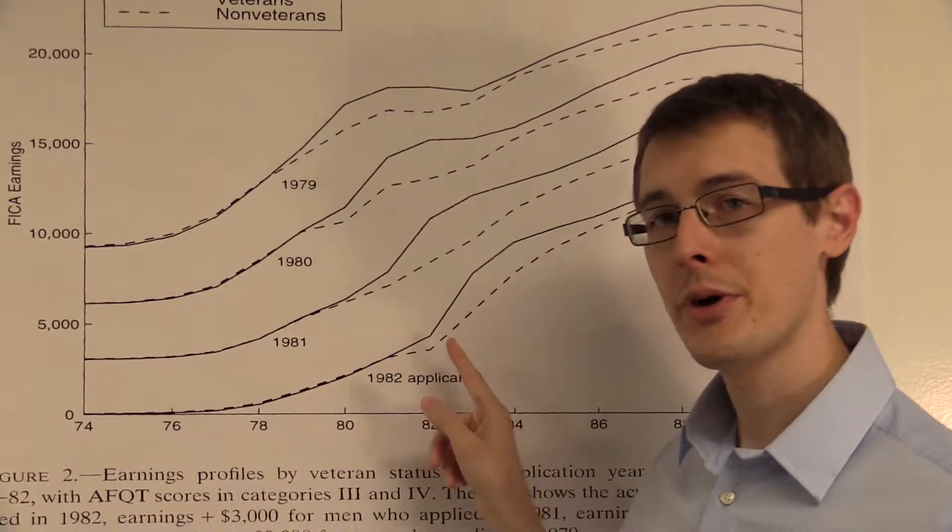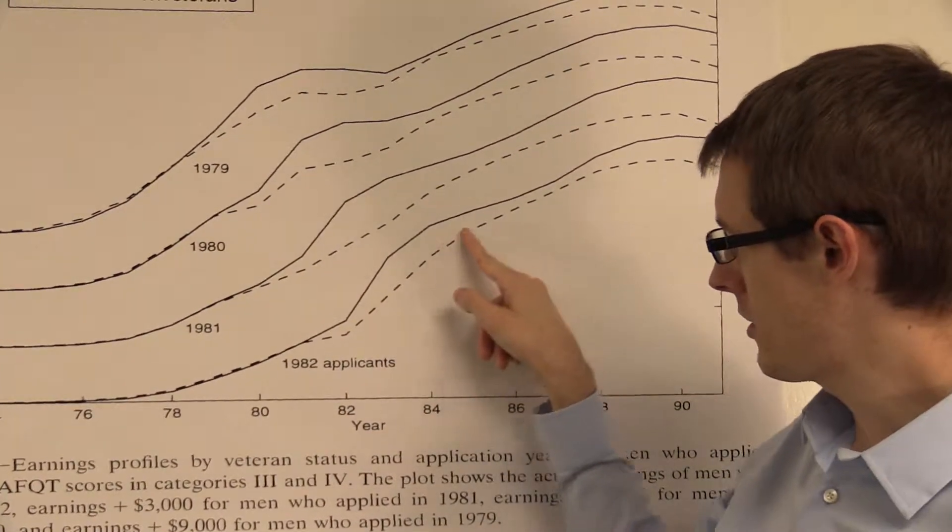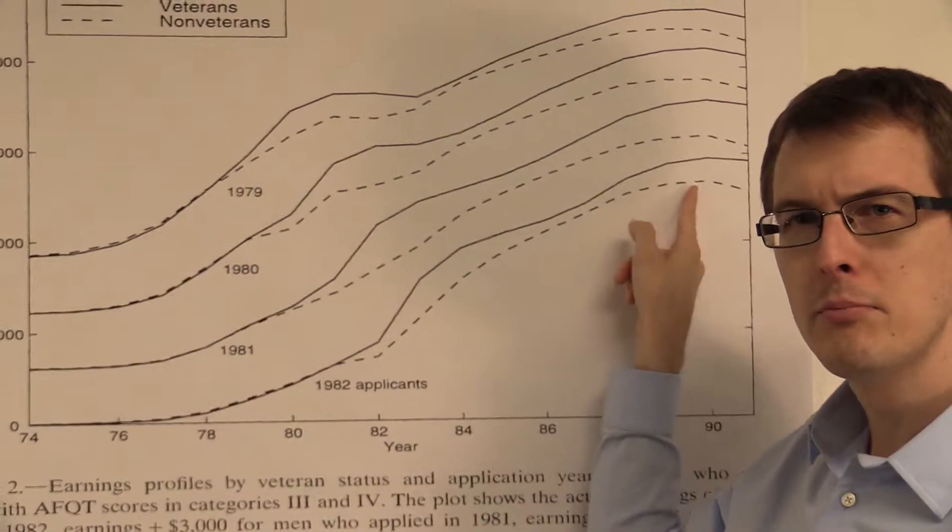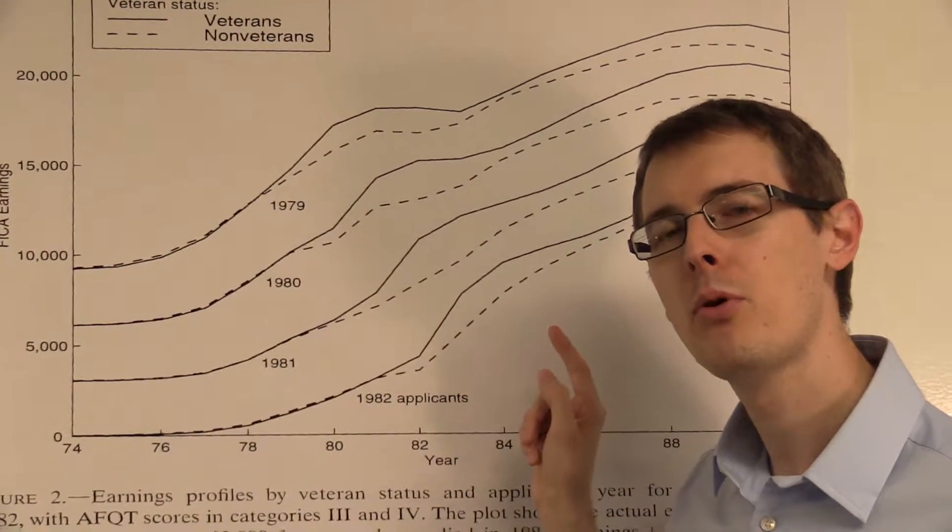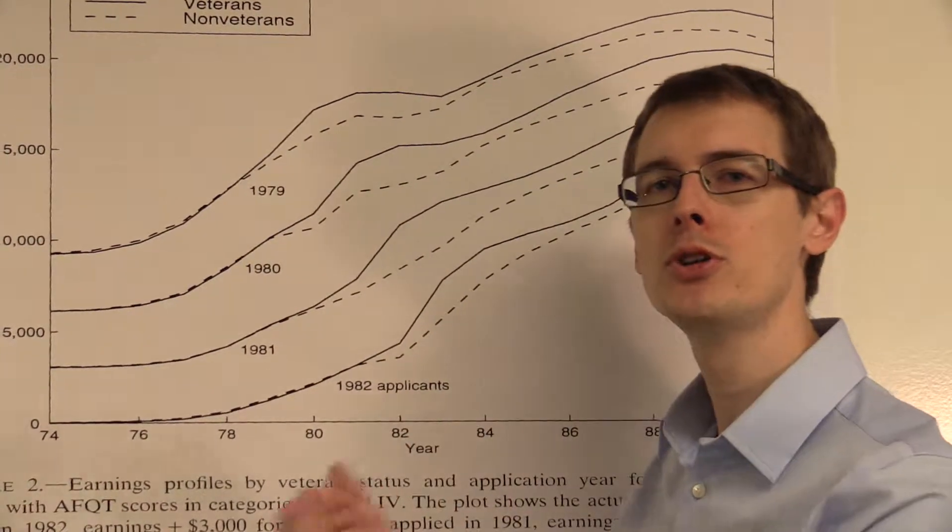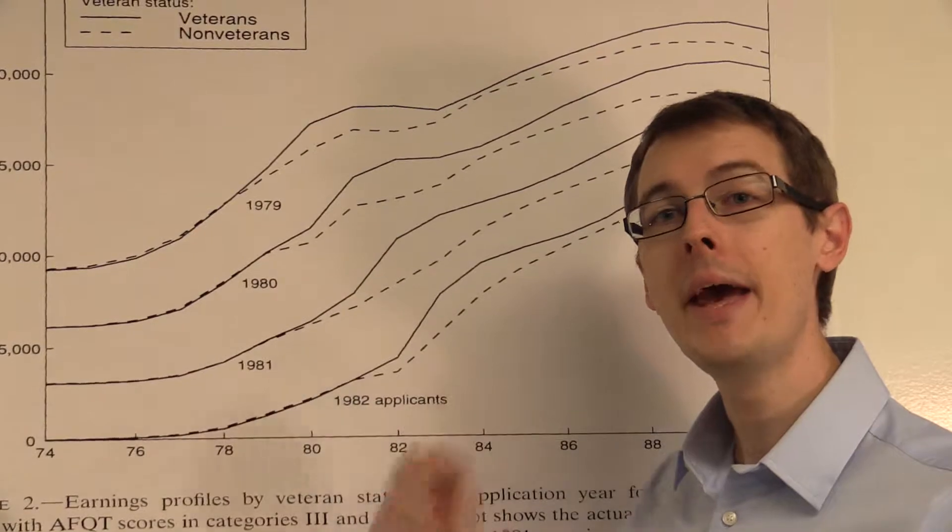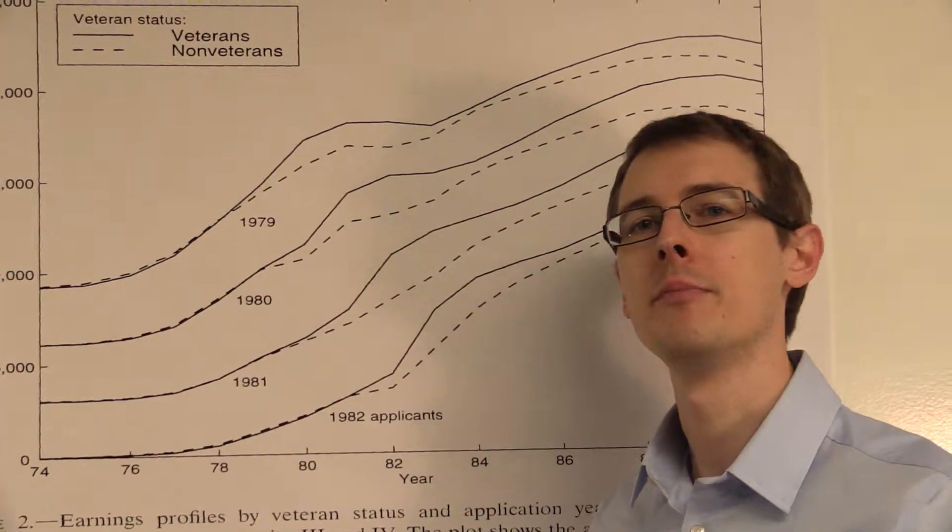If you didn't join the military, then your earnings are shown on the dotted line. So your earnings still increased over your lifetime, but they weren't quite as high as the people who joined the military. So we see that in the data, the people who joined the military, who applied in 1982, made more money over their entire life than people who didn't.